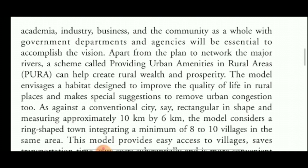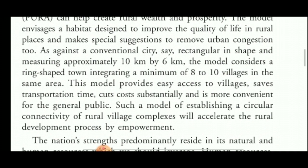The model envisages a habitat designed to improve the quality of life in rural places and makes special suggestions to remove urban congestion too. As against a conventional city — say rectangular in shape and measuring approximately 10 km by 6 km — the model considers a ring-shaped town integrating a minimum of 8 to 10 villages in the same area. This model provides easy access to villages, saves transportation time, cuts cost substantially, and is more convenient for the general public. Such a model of establishing a circular connectivity of rural village complexes will accelerate the rural development process by empowerment.